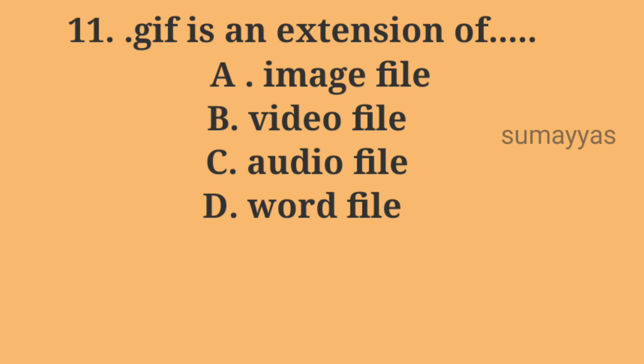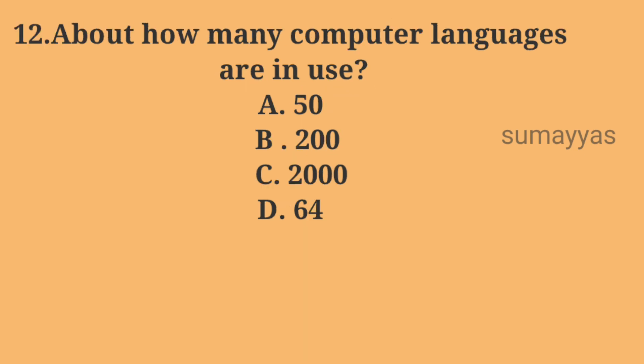Next question: the dot GIF extension is a type of — Option A: Image file. Option B: Video file. Option C: Audio file. Option D: Word file. The correct answer is Option A: Image file.